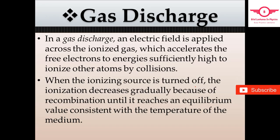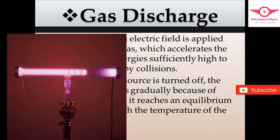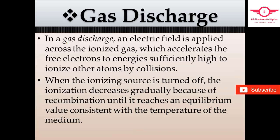The second type is gas discharge. An electric field is applied across the ionized gas. Free electrons are accelerated by the electric field and gain energy. This energy can be sufficiently high to ionize other atoms through collisions.